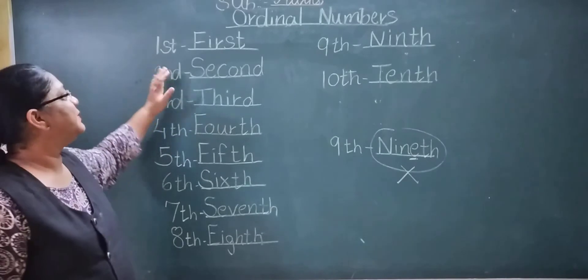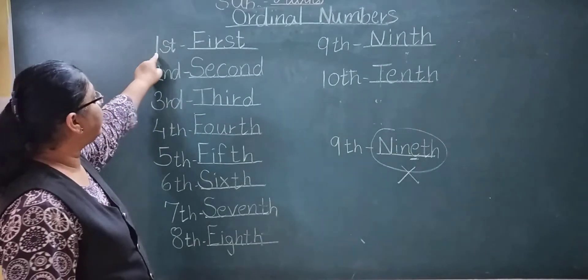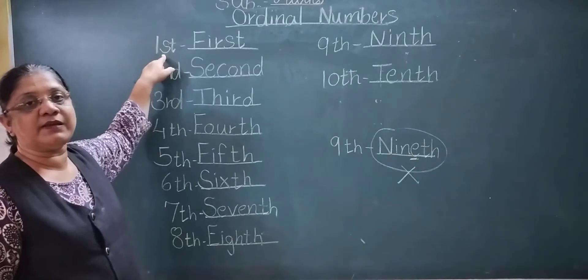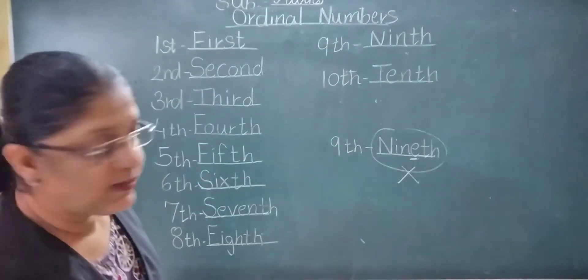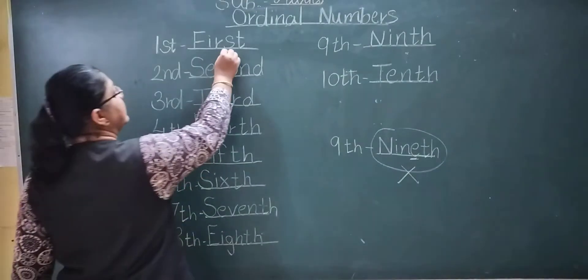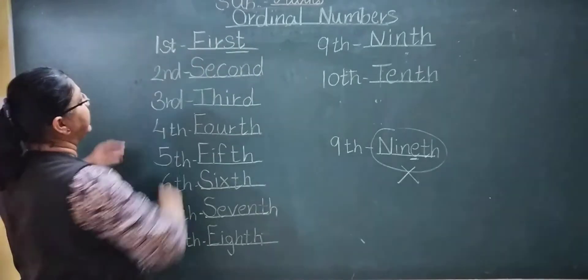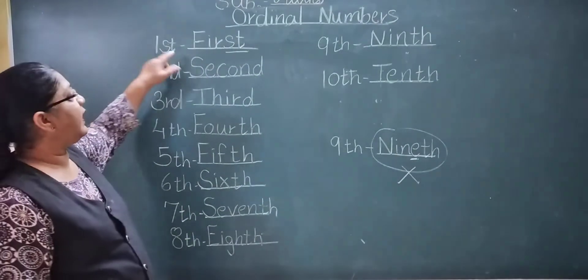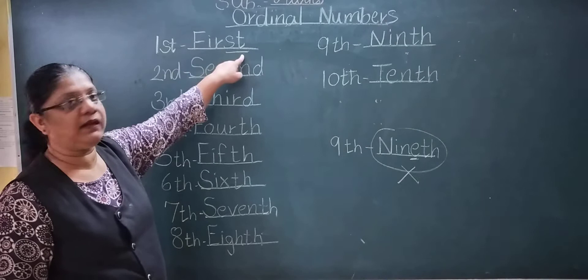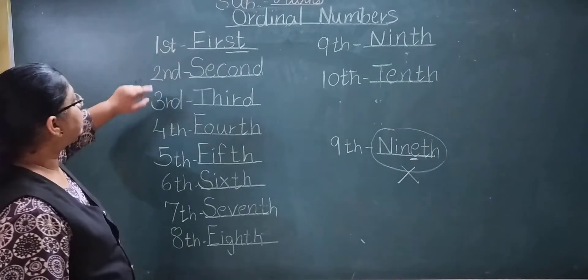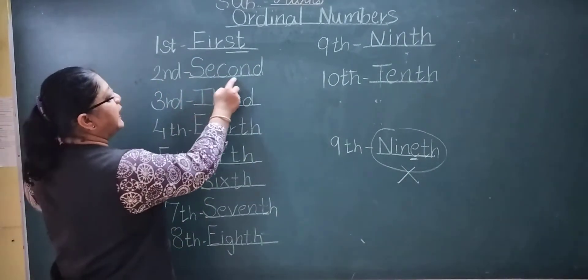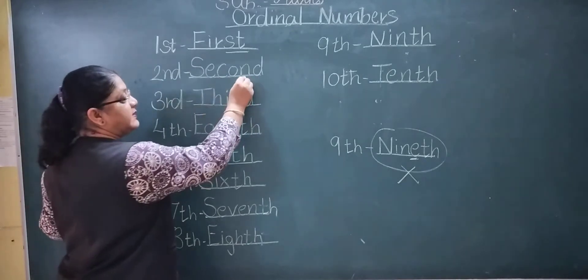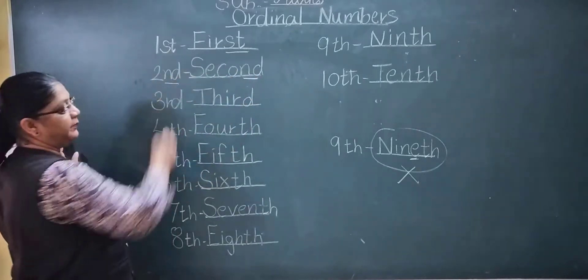Then shall I start? See, first, first you write number one and in front of this number, you just write ST. ST means this is the last two letters. These two letters you just write in front of this number. F-I-R-S-T. First, second, S-E-C-O-N-D. Second, see, N-D, you just write here.